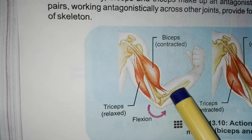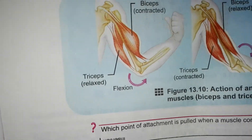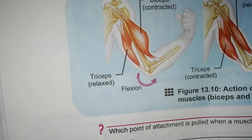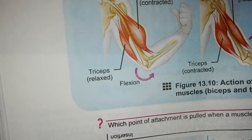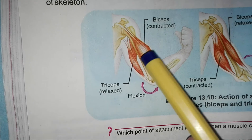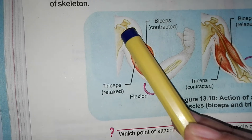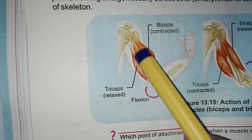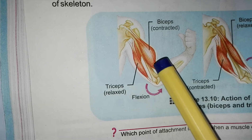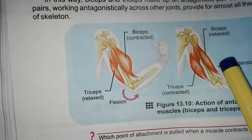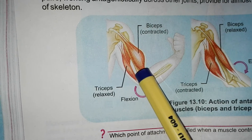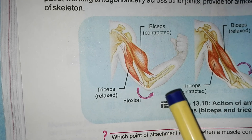When a nerve impulse stimulates a muscle, it will contract. The contracted muscle becomes shorter and thicker. It then pulls the moveable bone at the insertion point, causing movement.